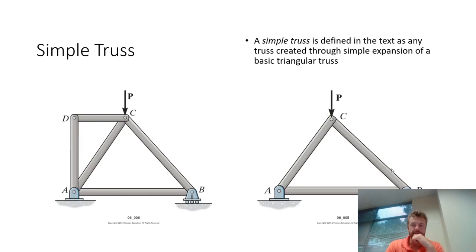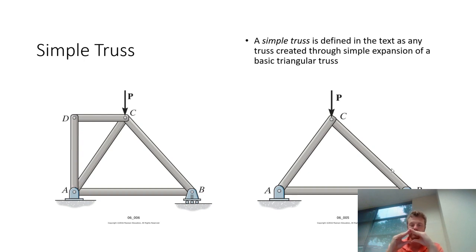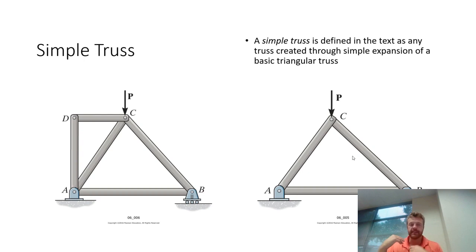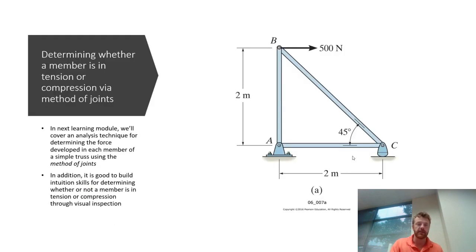What is a simple truss? The book defines a simple truss as anything that you can build up by adding individual members to the basic triangular structure shown on the right. Just know that definition when you're reading through — it basically means something that can be analyzed relatively easily using the two techniques that we're going to discuss in the remaining learning modules.